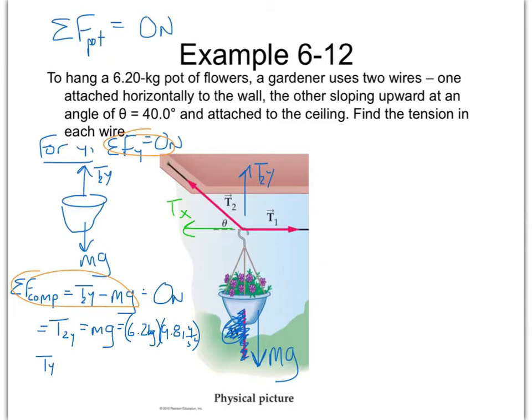So that means T2y is equal to 6.2 times 9.81, which is 60.8 newtons. Let's dotted line box that. That's helpful to us, but it's not the final answer. What's it actually asking us for? It's asking us for the full value of the tension in this wire.